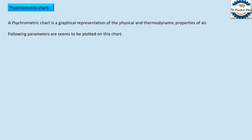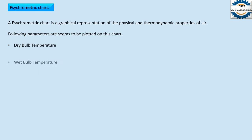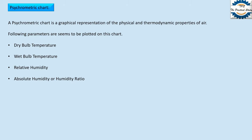The following parameters are plotted on this chart: number one, dry bulb temperature; wet bulb temperature; relative humidity; absolute humidity or humidity ratio; dew point temperature; specific volume; and enthalpy. We will learn all these parameters one by one and plot them on the psychrometric chart.